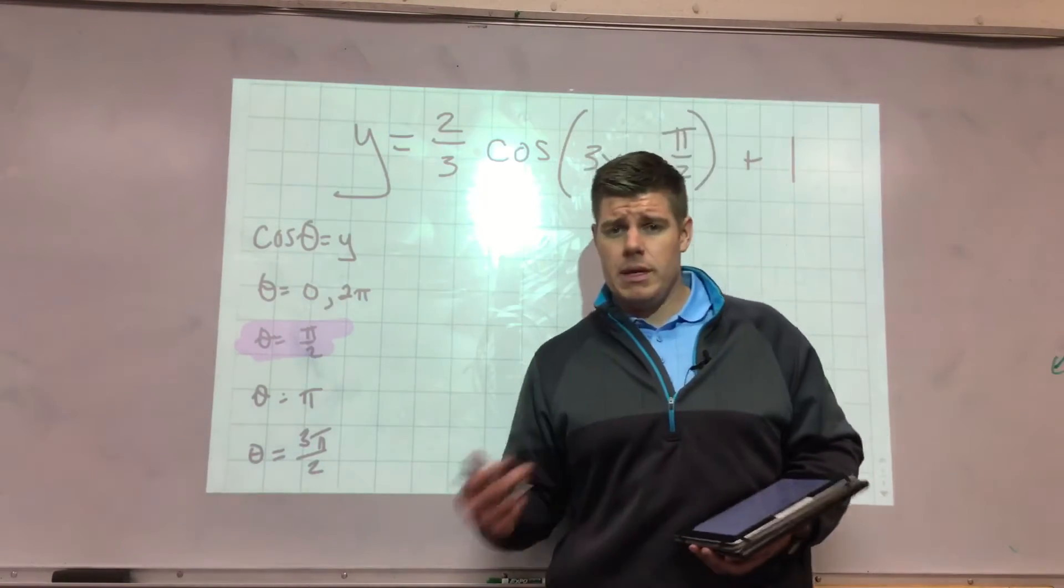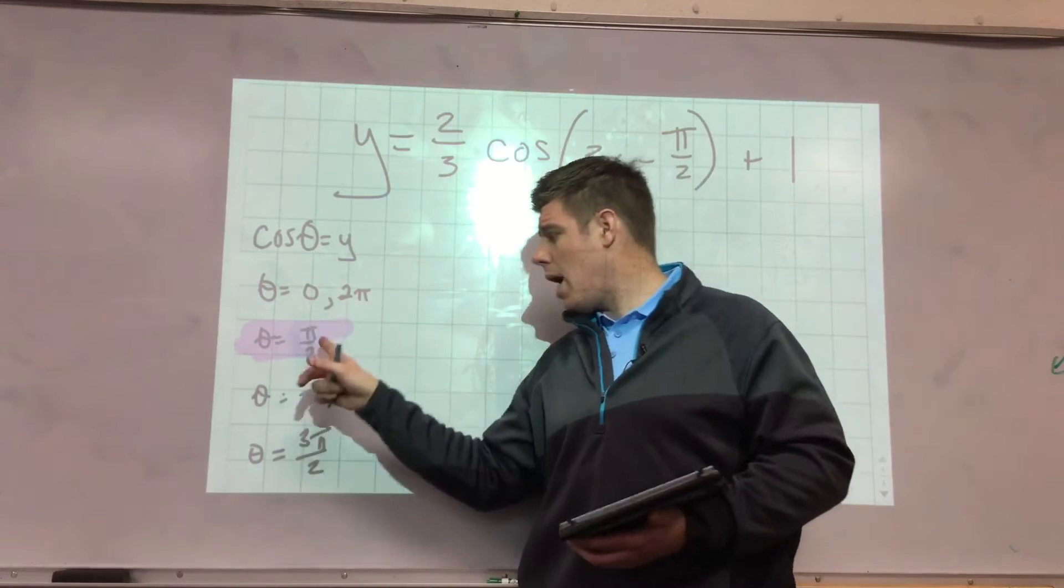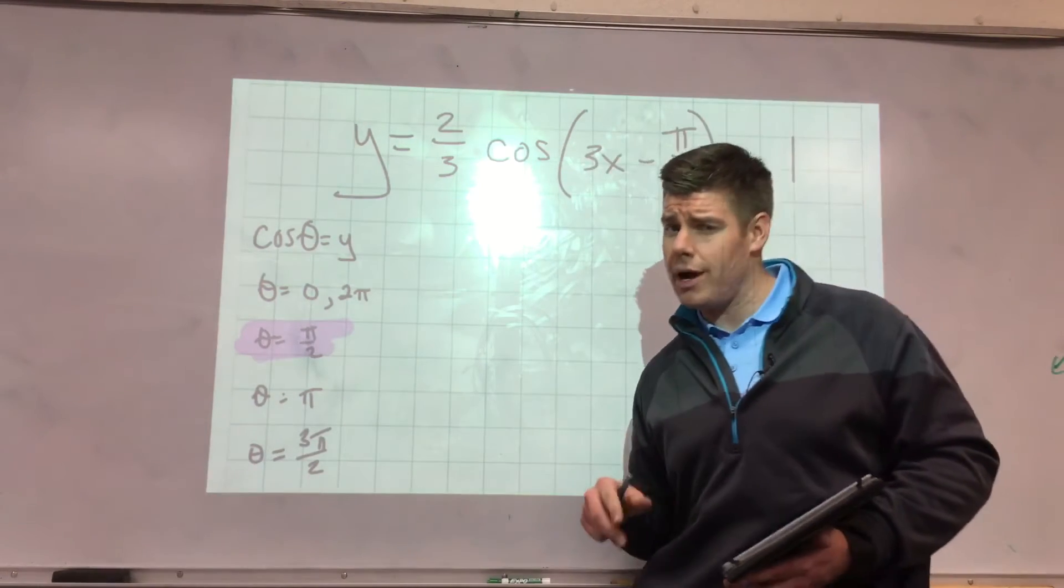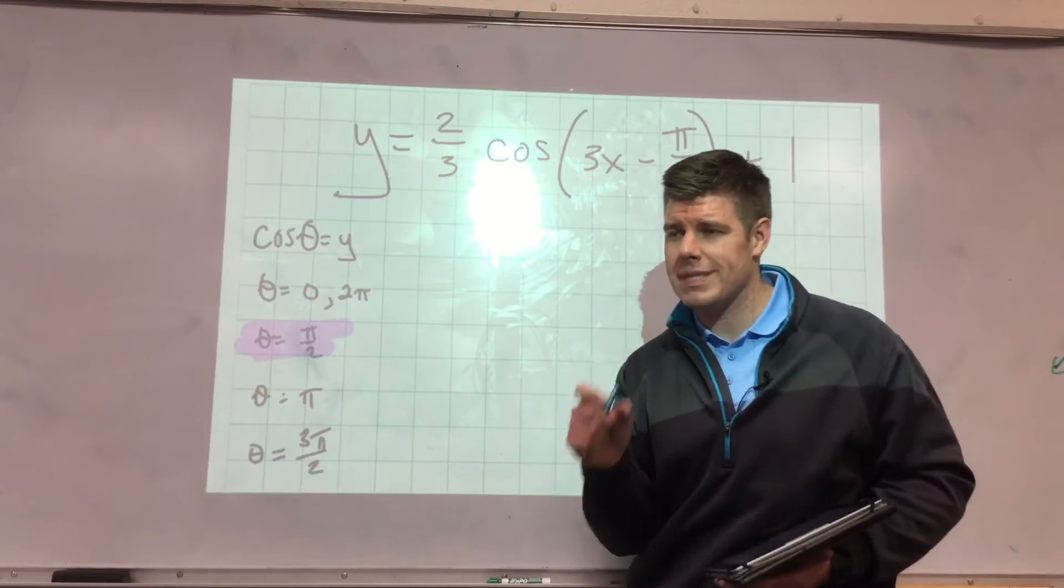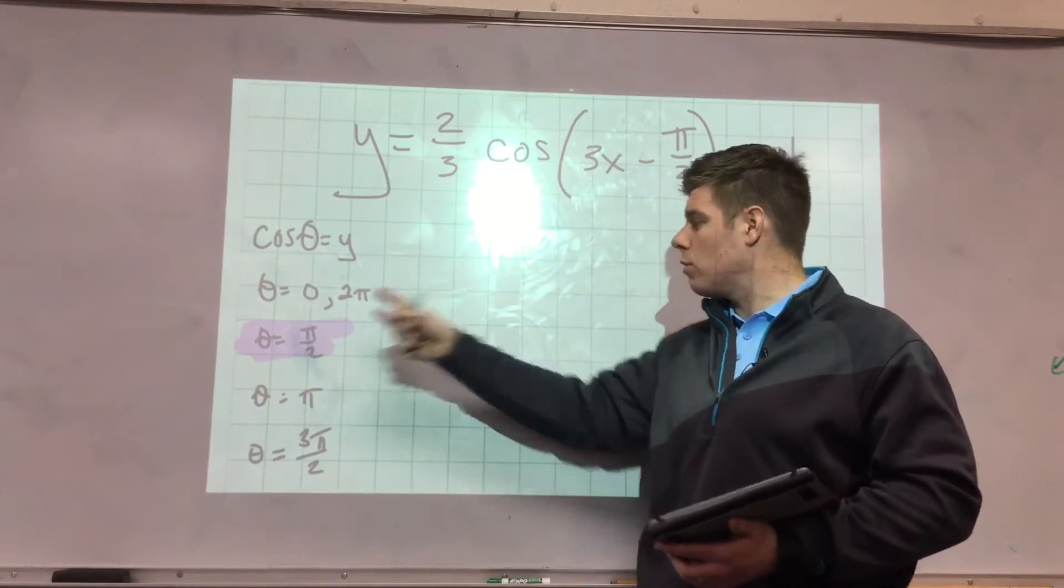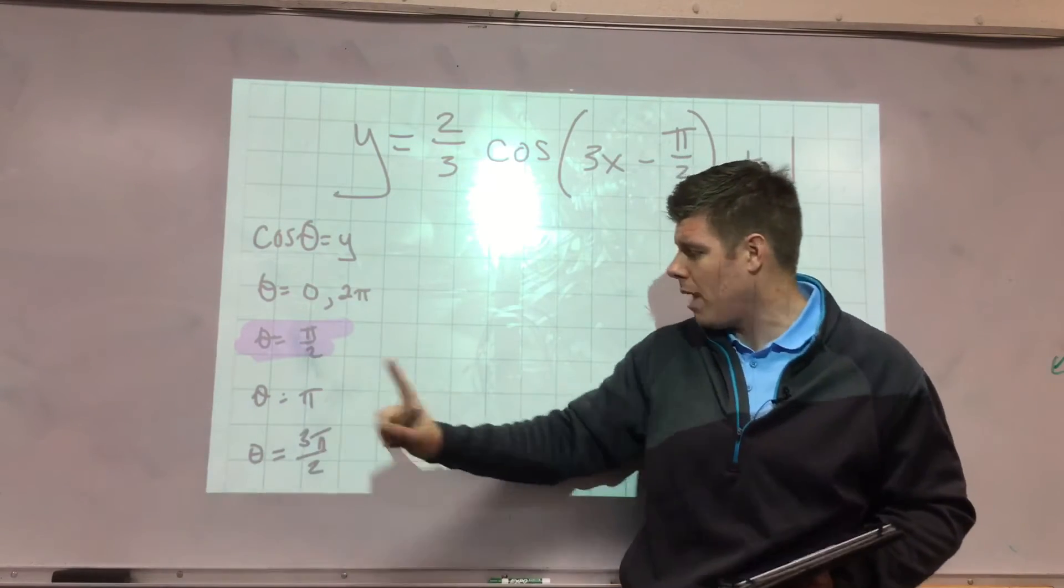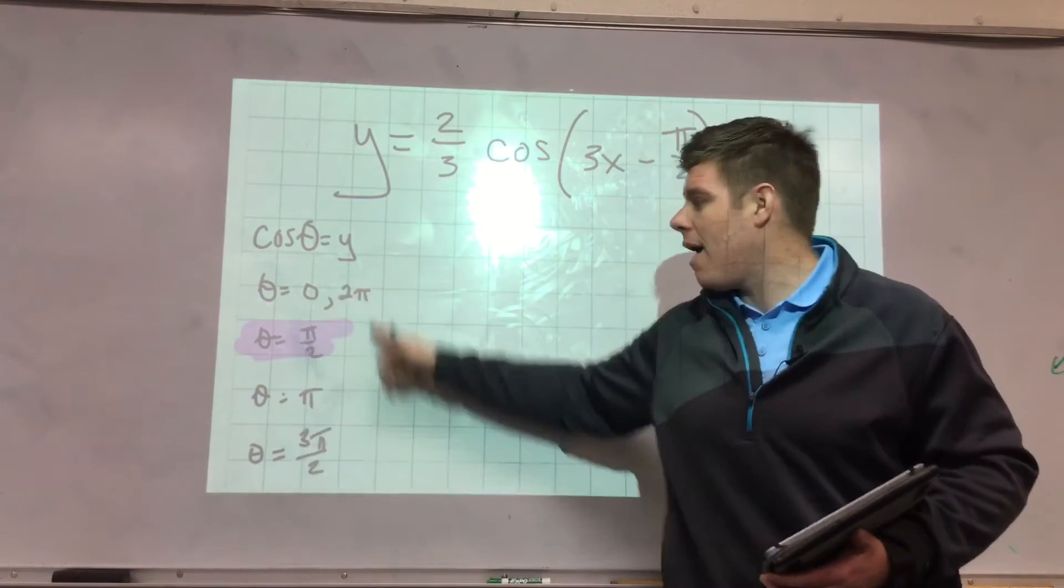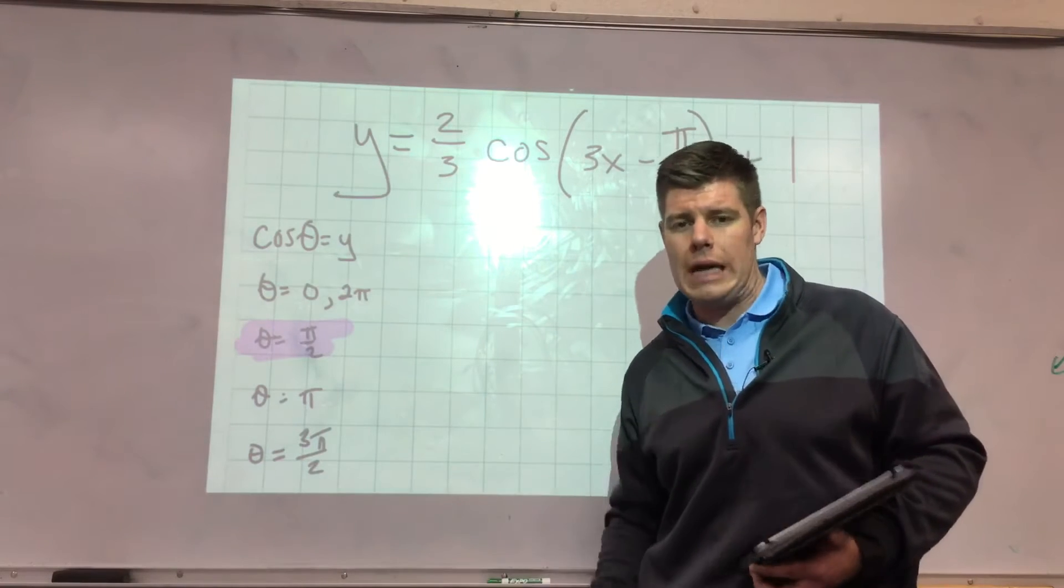The only ones that give me nice outputs are 0, 2π, π over 2, π, and 3π over 2. So essentially what you are trying to find is what are the specific inputs for x that will create 0, 2π, π over 2, π, and 3π over 2, which is why you always have to have those 5 points because these 5 are always the 5 that you want to create.